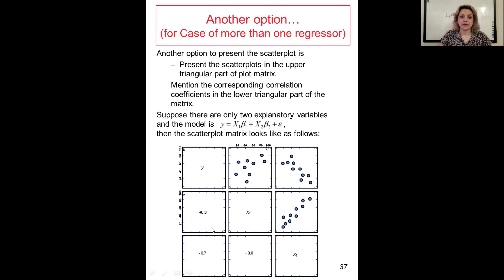For example, suppose that there are only two explanatory variables, x1 and x2. The scatter plot matrix would look like this. You have y, x1, and x2, and then you draw the scatter plot and consider the symmetric parts of it.